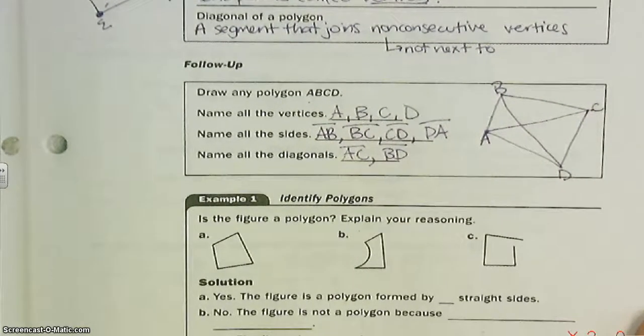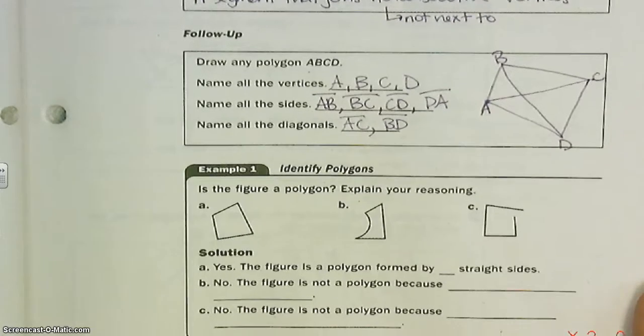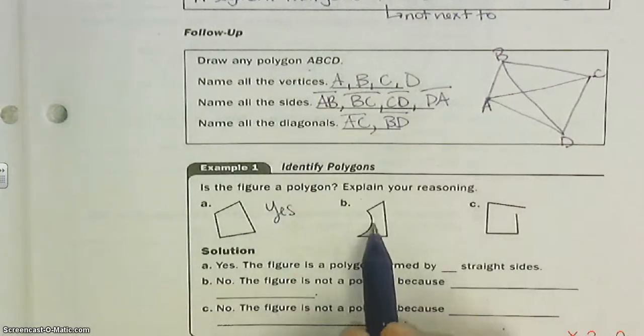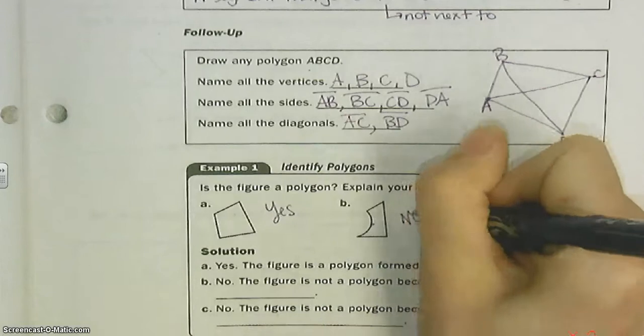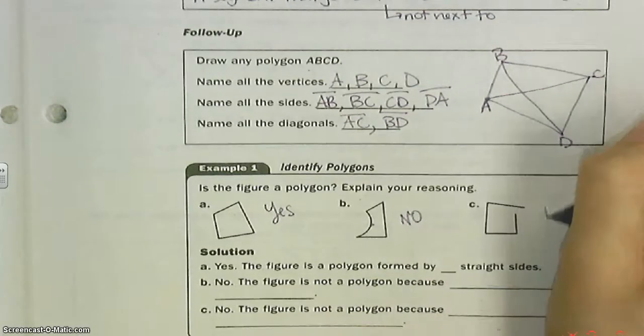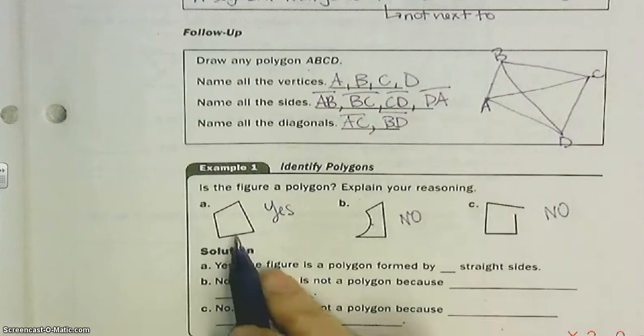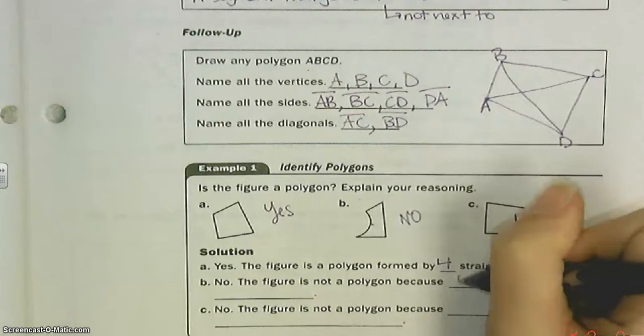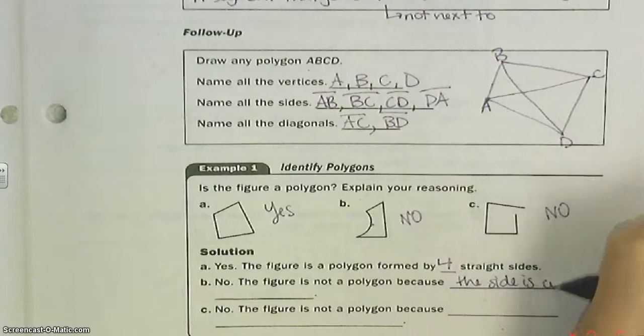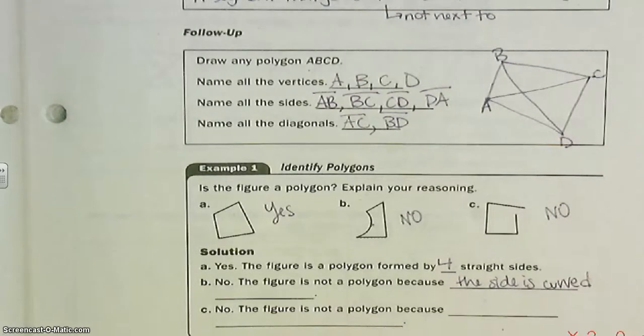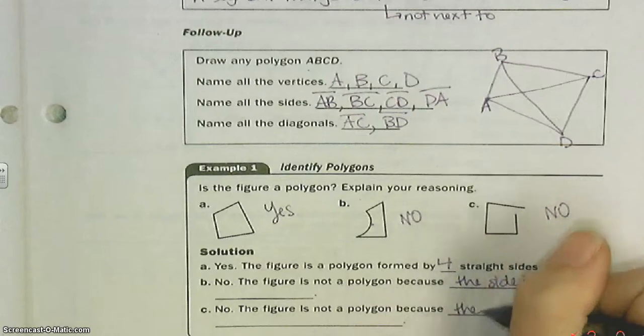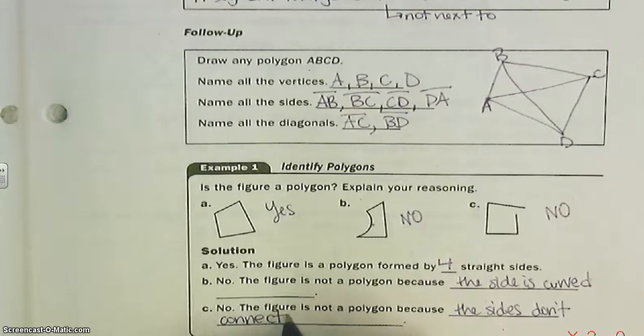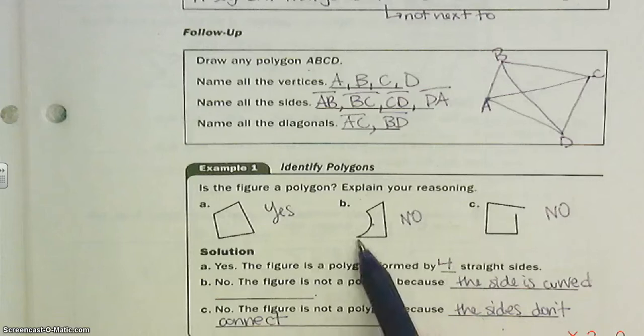Example one, identify polygons. Is the figure a polygon? Explain your reasoning. Well, look, we've got straight sides that are all connected, so this is yes. Here, polygons are not allowed to be curved, so this is no—the segments are not curved. And this isn't connected, so this is not a polygon. So A was yes—this figure is a polygon formed by four straight sides. This figure is not a polygon because the side is curved. And C is not a polygon because the sides don't connect. So polygons have to be straight, and they have to be totally closed. They cannot be curved.